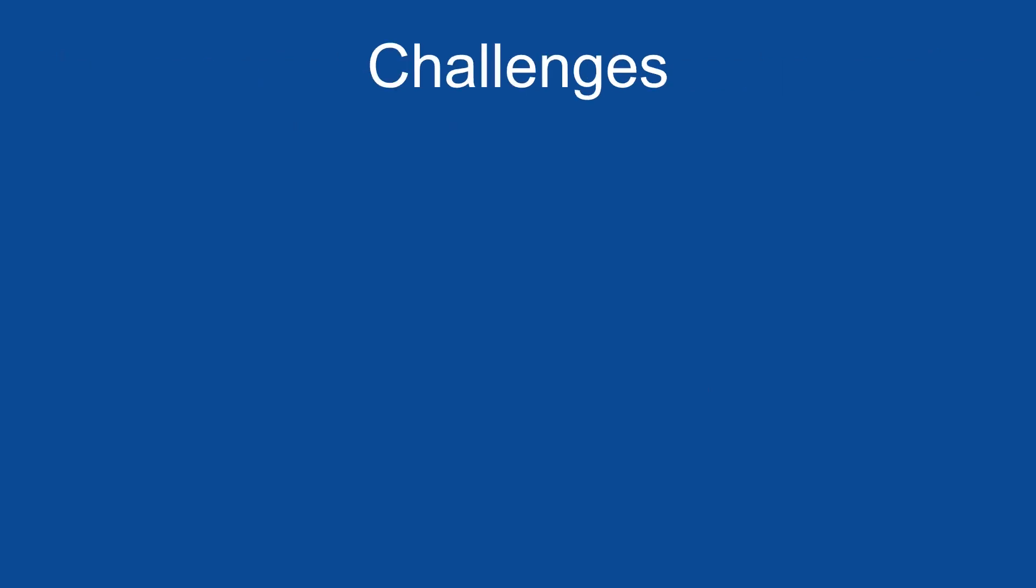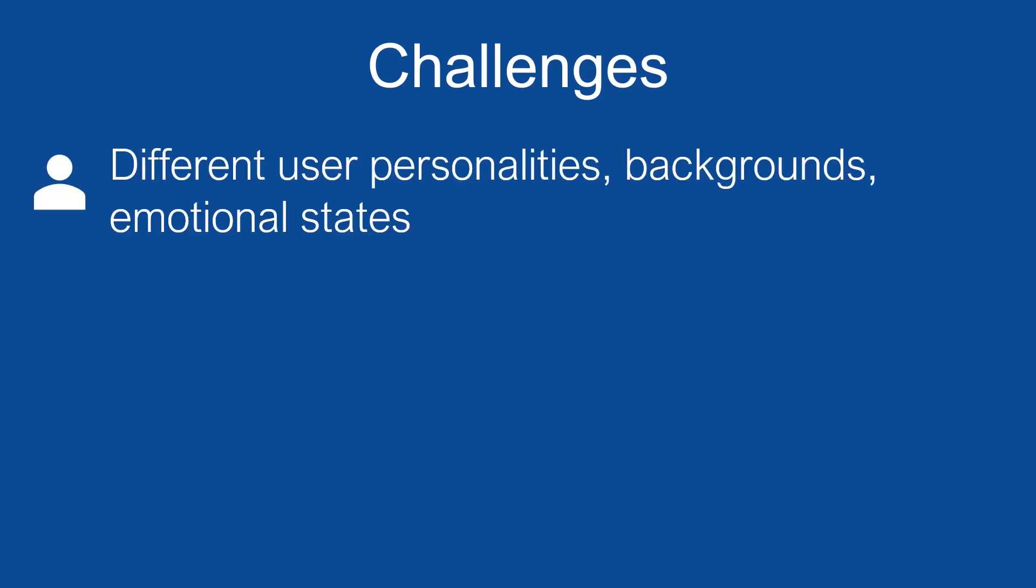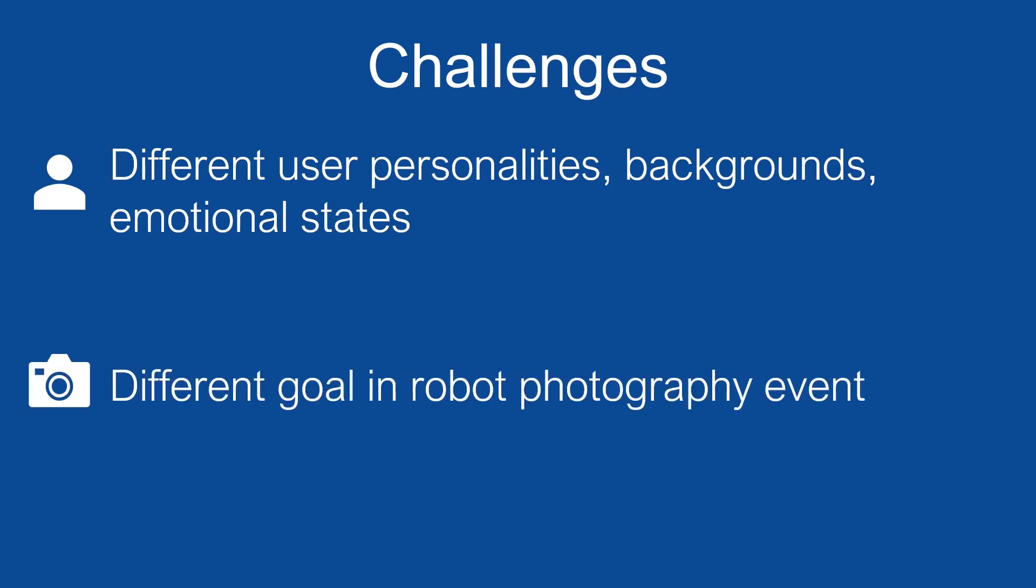Designing the social interactions of a robot photographer also comes with its own set of challenges. For one, you have the people involved, coming from a diverse set of personalities, backgrounds, and emotional states. Some people may love having their picture taken and being in front of a camera, while others may be shyer. People also come into a robot photography event with different goals in mind. Some may be intrigued by the robot and want to spend as much time with it as they can, while others may focus on getting a high-quality photo or on taking a decent picture as quickly as possible.